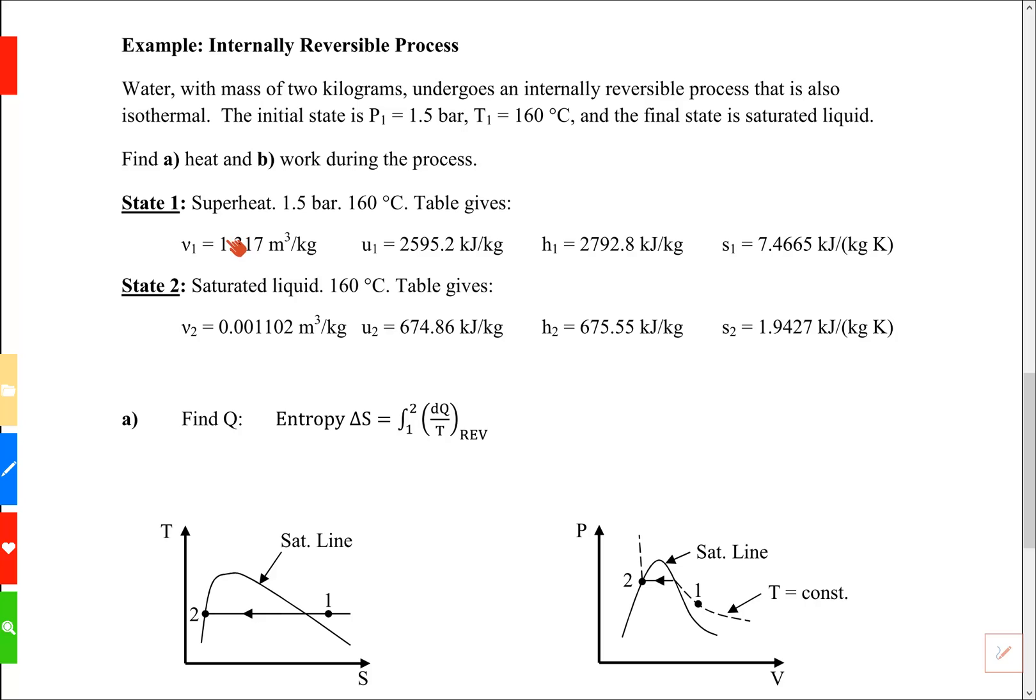The initial state is superheat so the superheat table for water at 1.5 bar and 160°C has values for specific volume, internal energy, enthalpy and entropy.